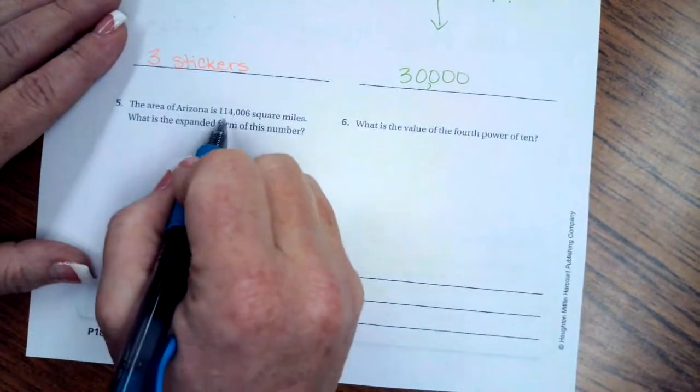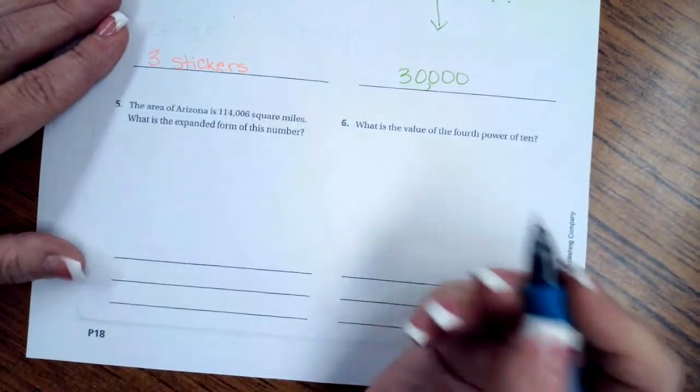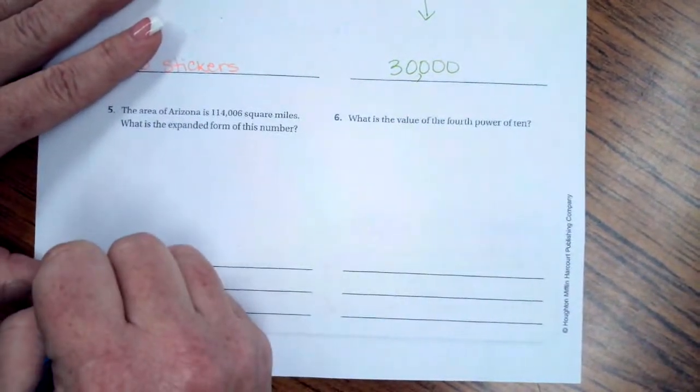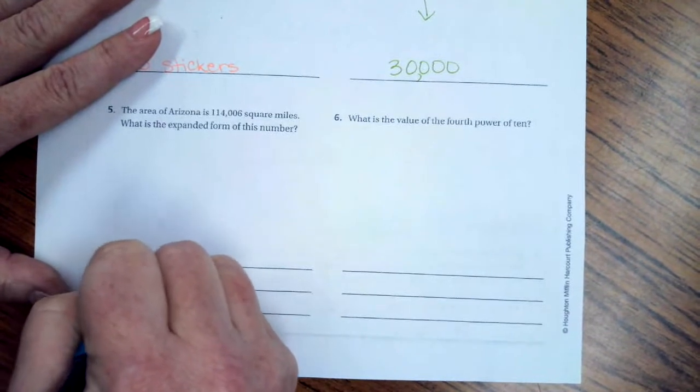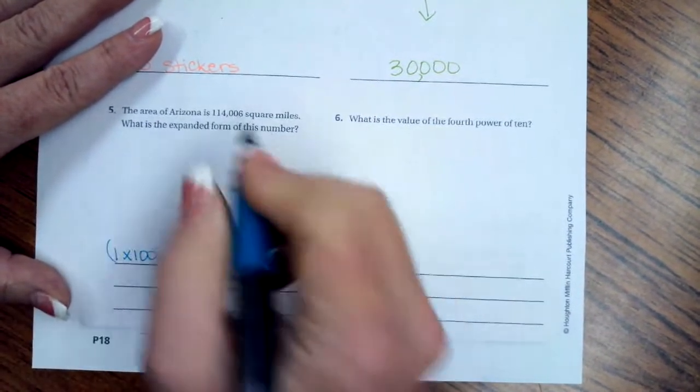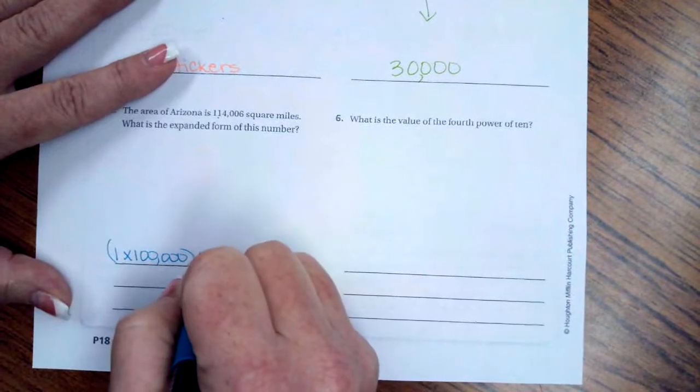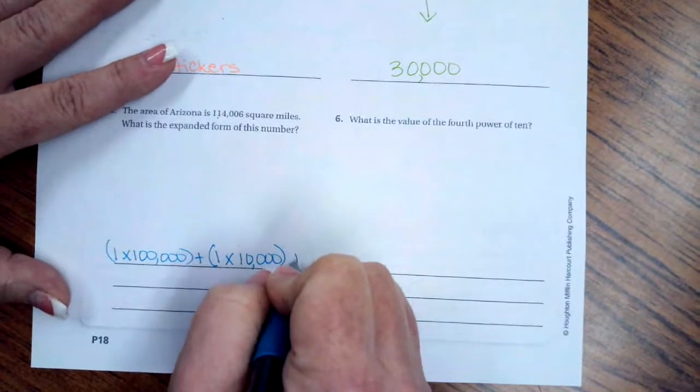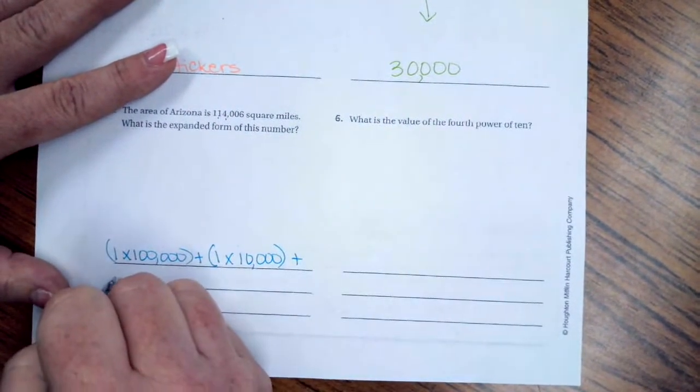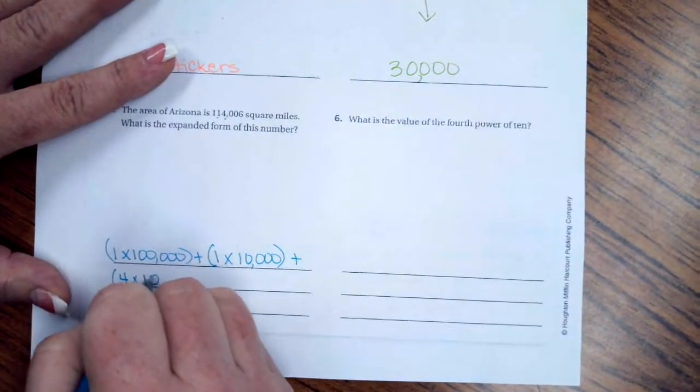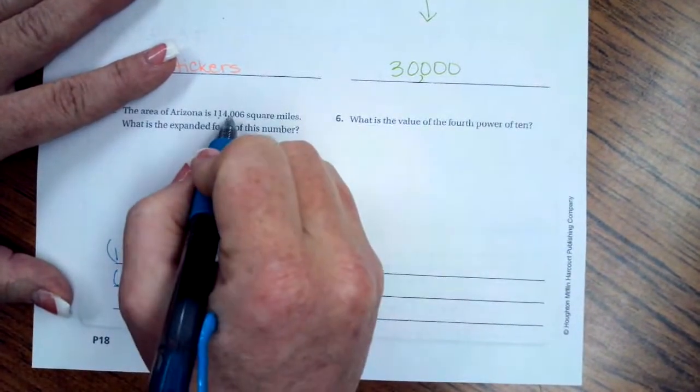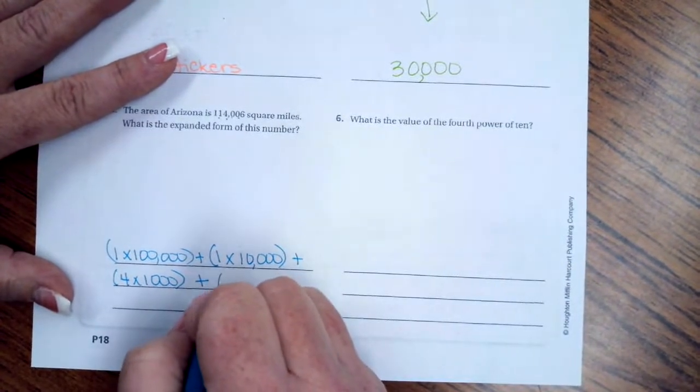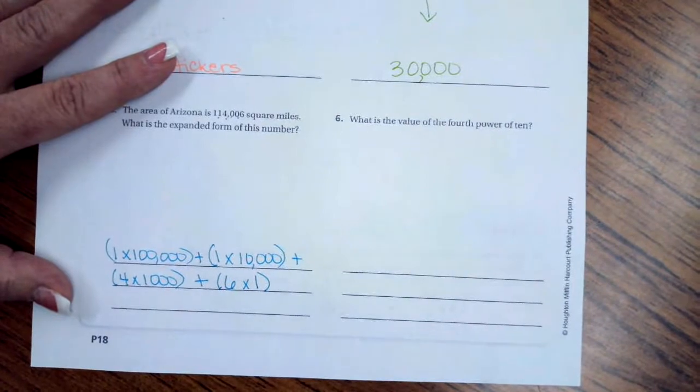The area of Arizona is 114,006 square miles. What is the expanded form of this number? Well, I have a 1 in the 100,000's place. So 1 times 100,000. Plus a 1 in the 10,000's place. So 1 times 10,000. Plus a 4 in the 1,000's place. So 4 times 1,000. Plus, I don't have any value for those two 0's. I don't have to do anything with them. But plus 6 is in the 1's place.